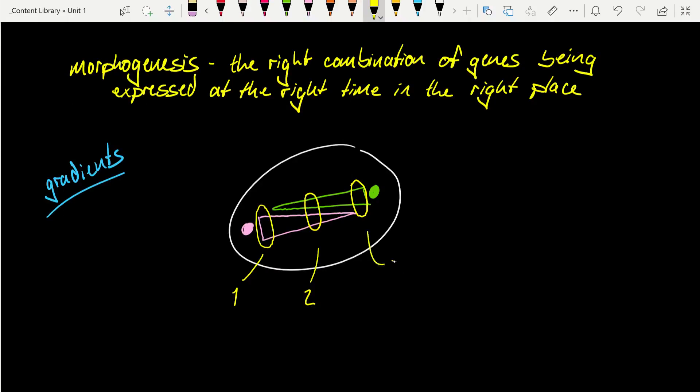And of course, we can see in this last region over here, number three, this is just a dominant green signal with no pink in it. And so, especially early on in development, the idea of gradients is really important to establish body axes, to tell cells what to differentiate into. And this is how we begin the process of morphogenesis.